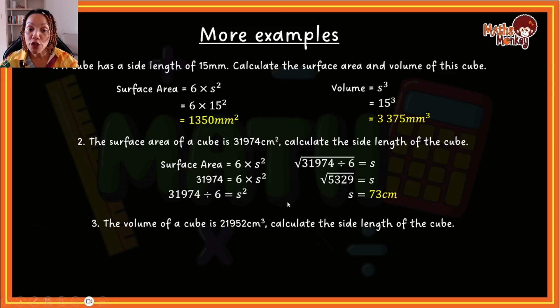Okay. Let's look at another example. The volume of a cube is 21,952 centimeters cubed. Calculate the side length of the cube. So again, we start with our formula, right? And now we have to work back because remember, they've given us the volume now.